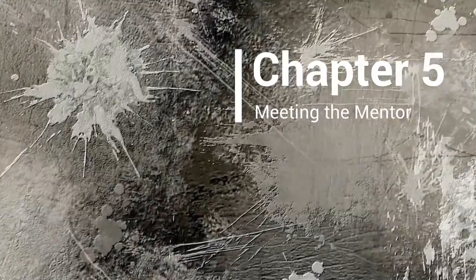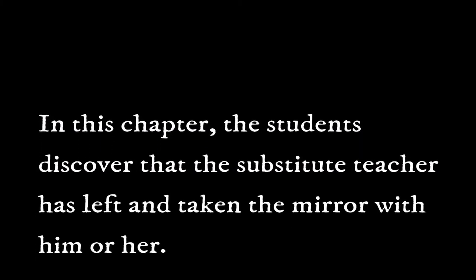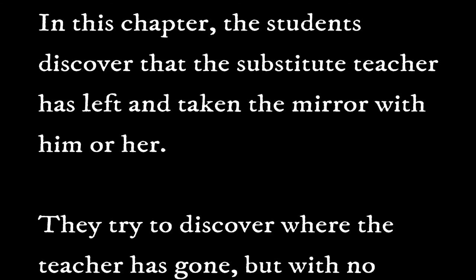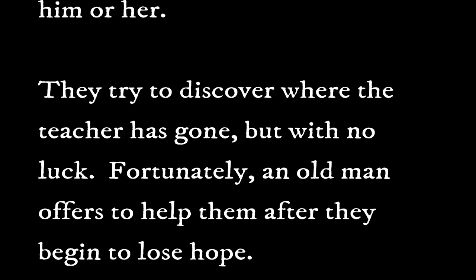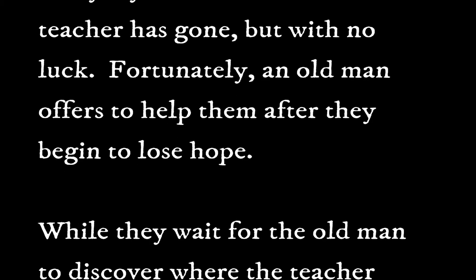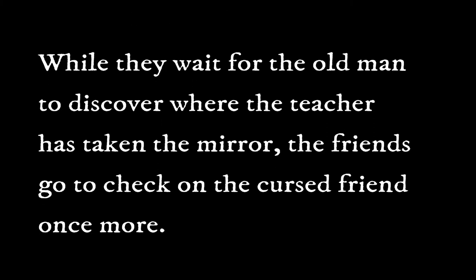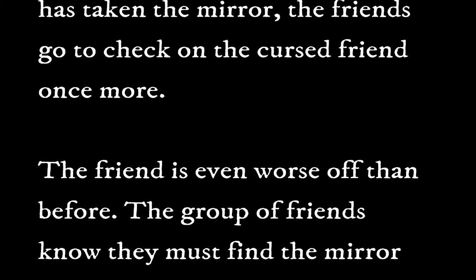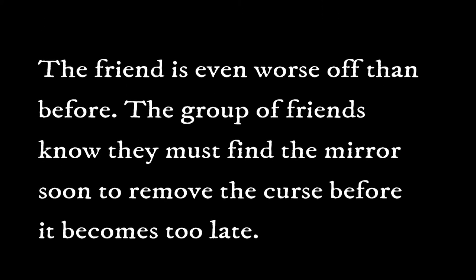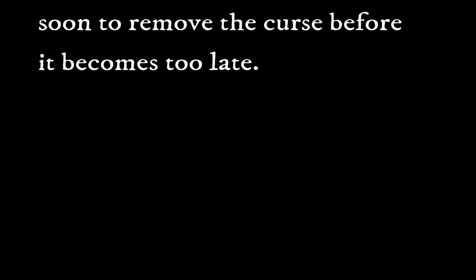Chapter 5: Meeting the Mentor. In this chapter, the students discover that the substitute teacher has left and taken the mirror with him or her. They try to discover where the teacher has gone, but with no luck. Fortunately, an old man offers to help them after they begin to lose hope. While they wait for the old man to discover where the teacher has taken the mirror, the friends go to check on the cursed friend once more. The friend is even worse off than before, and the group knows they must find the mirror soon to remove the curse before it's too late.